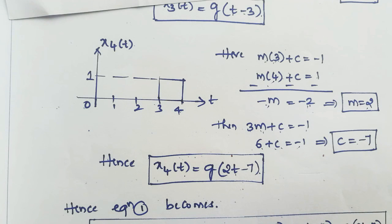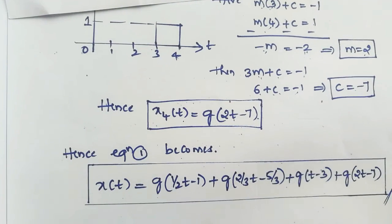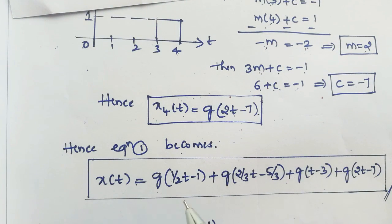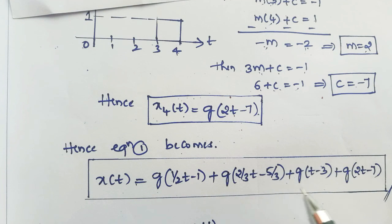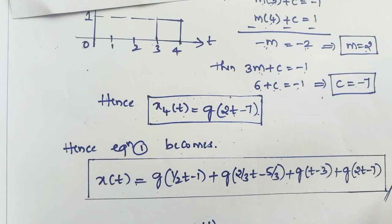Substituting into equation one, the final answer is: X of T = G(1/2 · T − 1) + G(2/3 · T − 5/3) + G(T − 3) + G(2T − 7). Hence we have successfully expressed the given staircase signal X of T in terms of G of T.